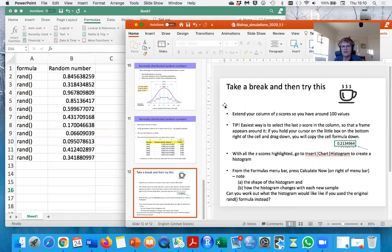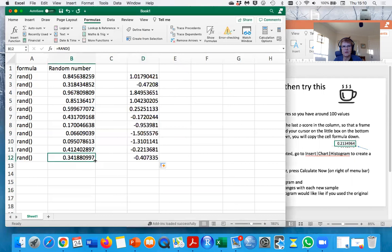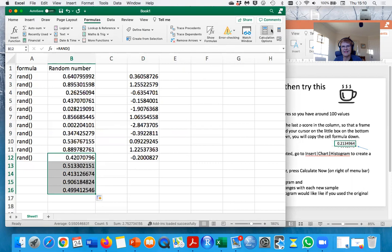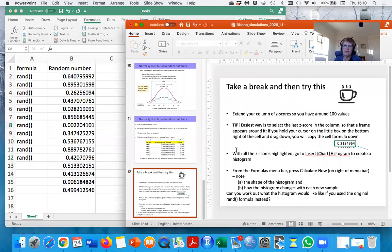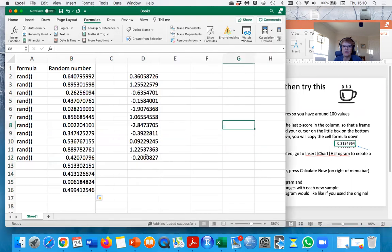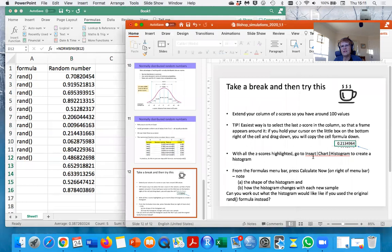So what I've suggested at this point is that you take a little break to explore this more and extend your column of Z scores. So you have around 100 values. And I showed you here if you want to actually just extend something, you can grab that little square and pull it down like that. Again, we need to go up here and turn it on automatic to get that back. And then I've suggested that you highlight all the Z scores, you need to pull that formula down as well for 100. And then go to insert chart histogram and you create a little histogram.